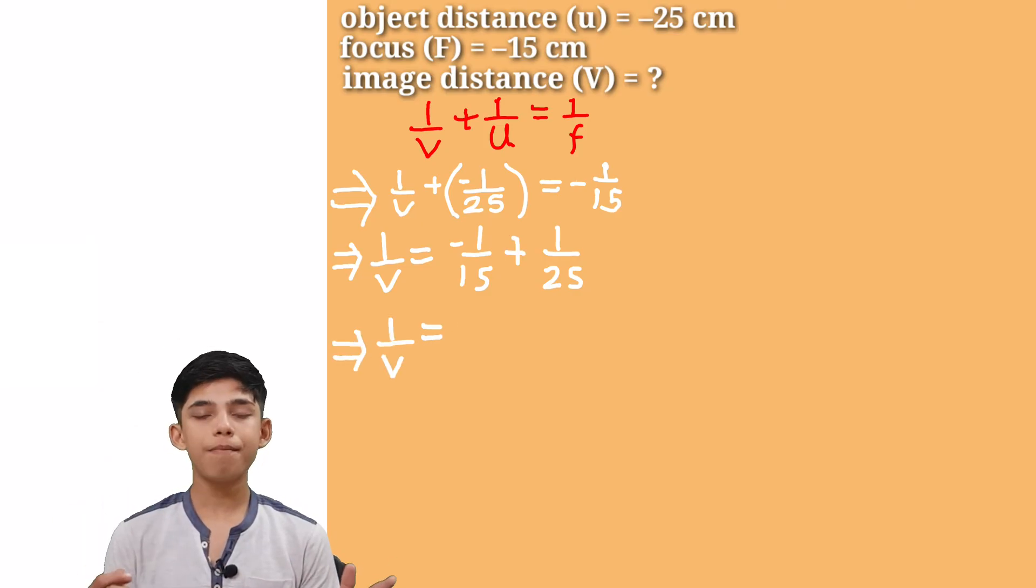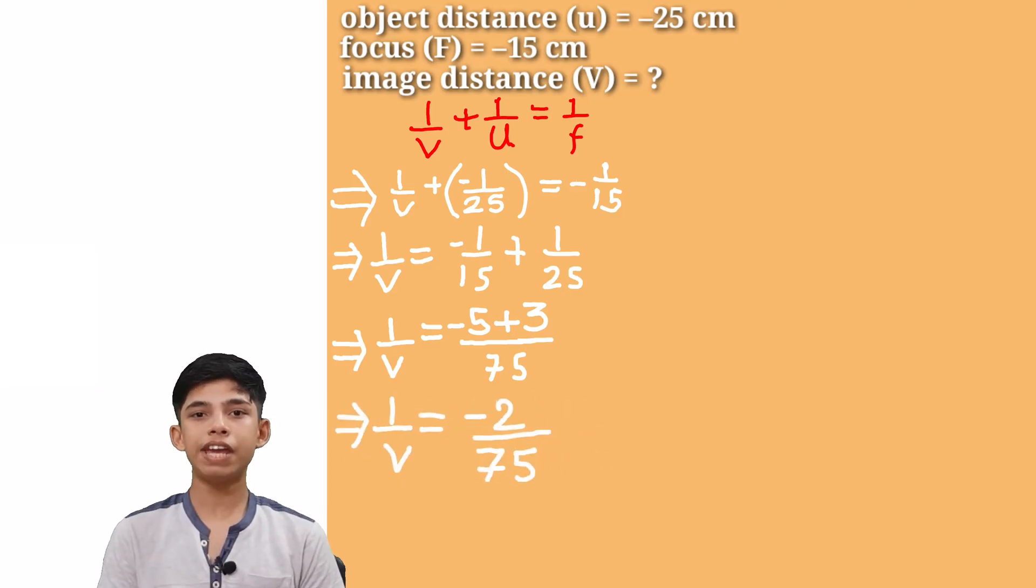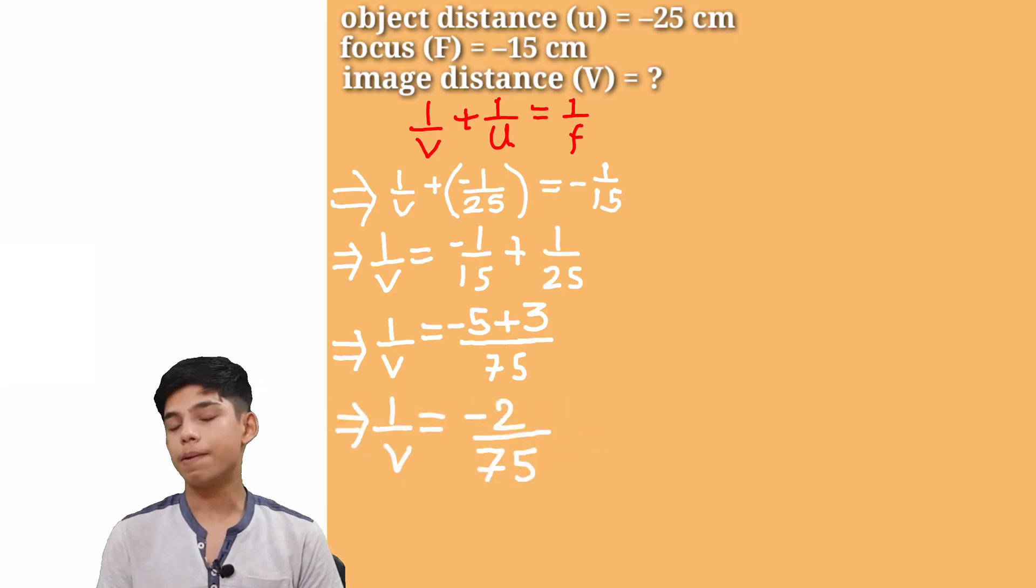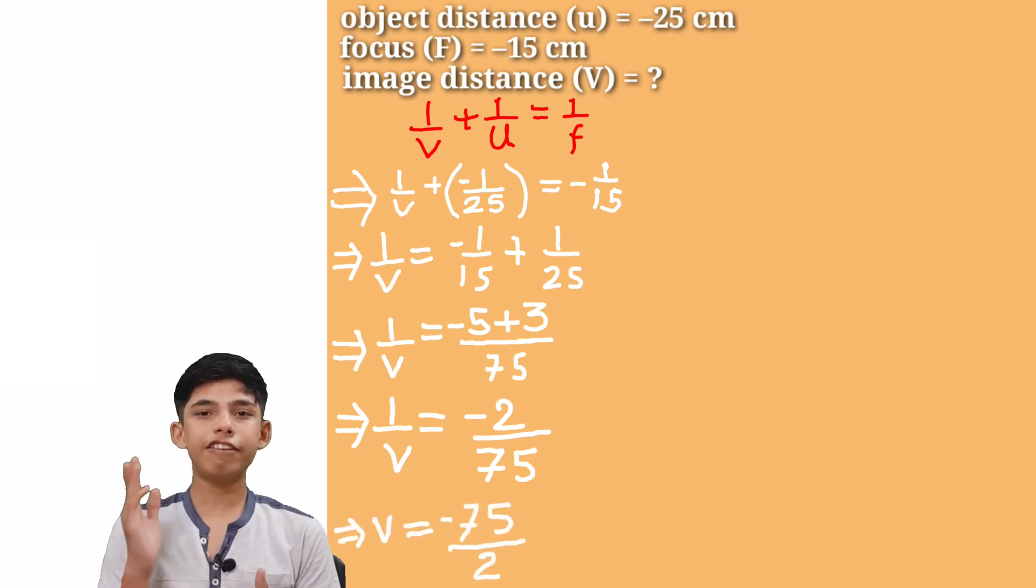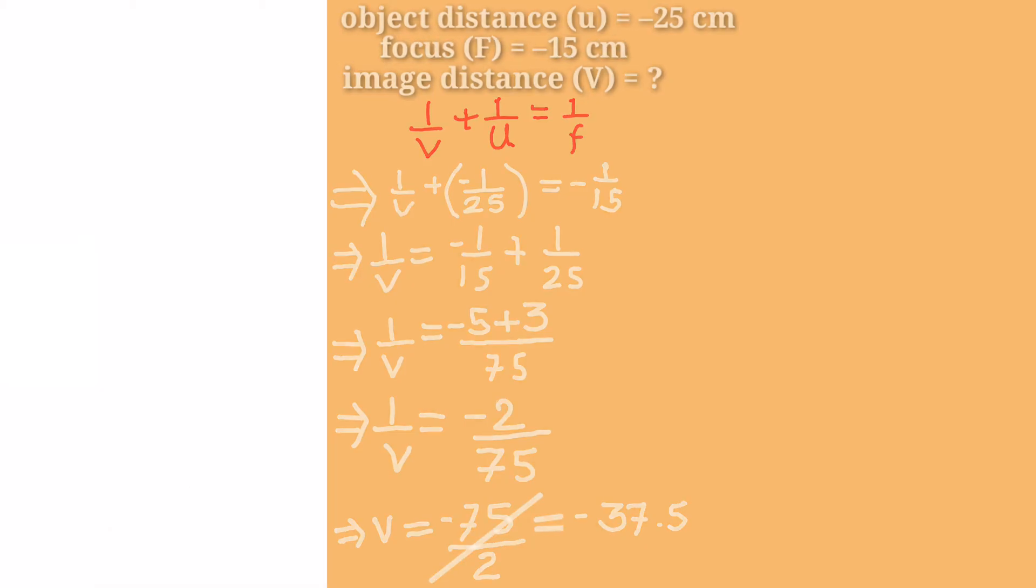Let's take the LCM. We are going to get minus 5 plus 3 by 75 and this is going to give us minus 2 by 75 as the value of 1 by v. Now let's cross multiply this and we are going to get minus 75 by 2 as the value of v and we can also cut this out and get minus 37.5 centimeters and this value is negative. It means that our image is on the left side of the mirror.